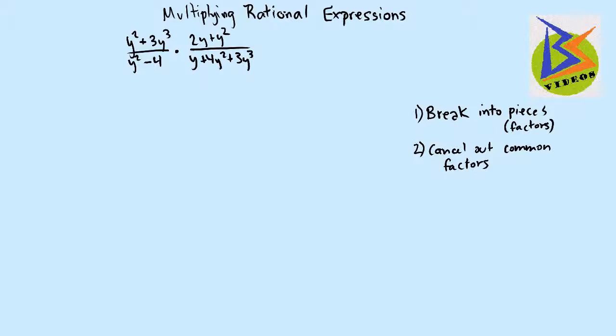So as I just said, we're going to start by breaking these into their pieces or by factoring. So let's just start at the top. Let's look at the y squared plus 3y cubed. We see it's a binomial. It's not a difference of squares because we're adding. But we can pull out a greatest common factor of y squared. Now we need to remember to keep our placeholder. So y squared divided by y squared is 1. And then in the second term, we're left with 3y.